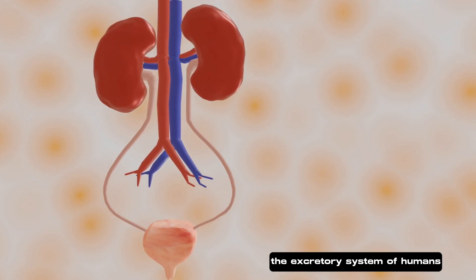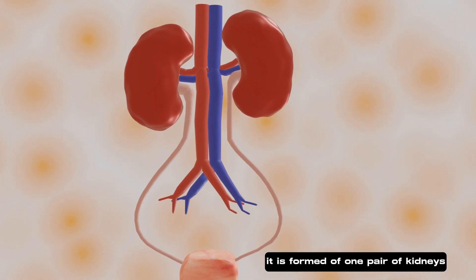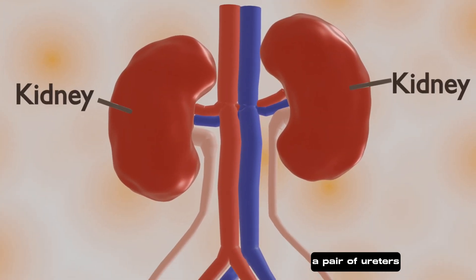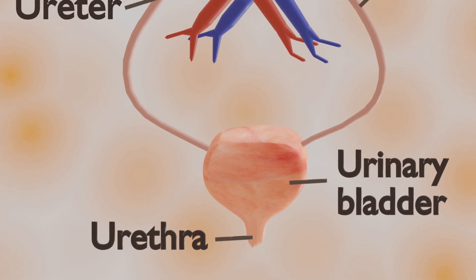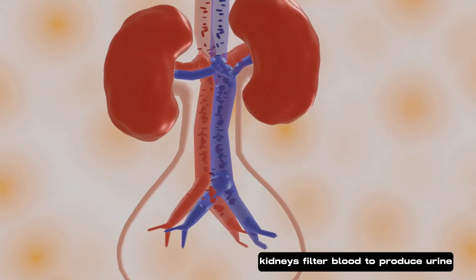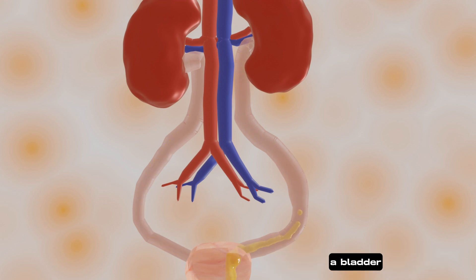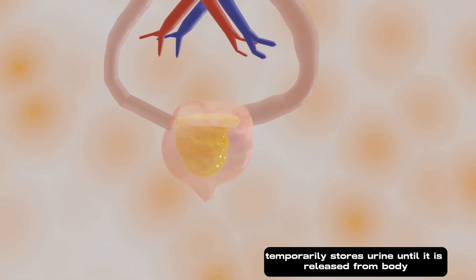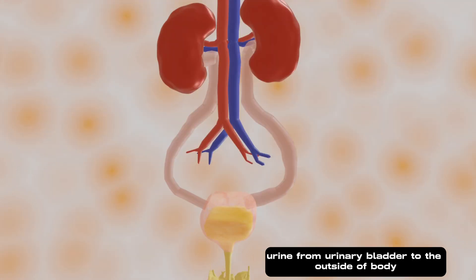The excretory system of humans is also called the urinary system. It is formed of one pair of kidneys, a pair of ureters, a urinary bladder, and a urethra. Kidneys filter blood to produce urine, and the ureters carry urine from kidneys to the urinary bladder. The bladder temporarily stores urine until it is released from the body. The urethra is the tube that carries urine from the urinary bladder to the outside of the body.